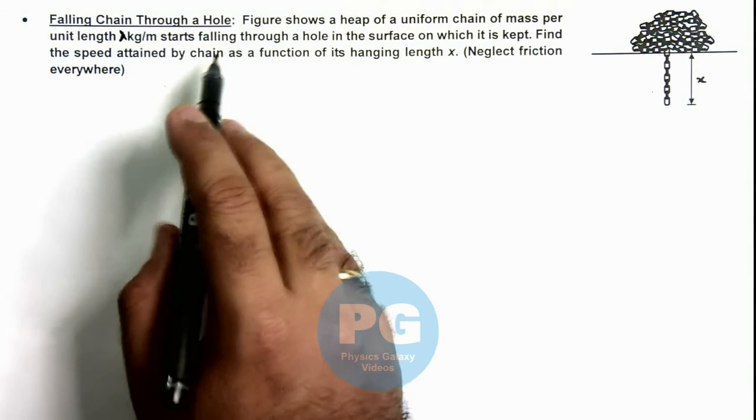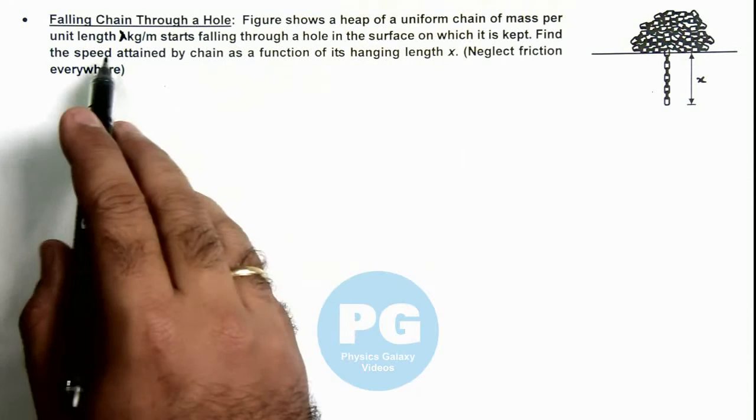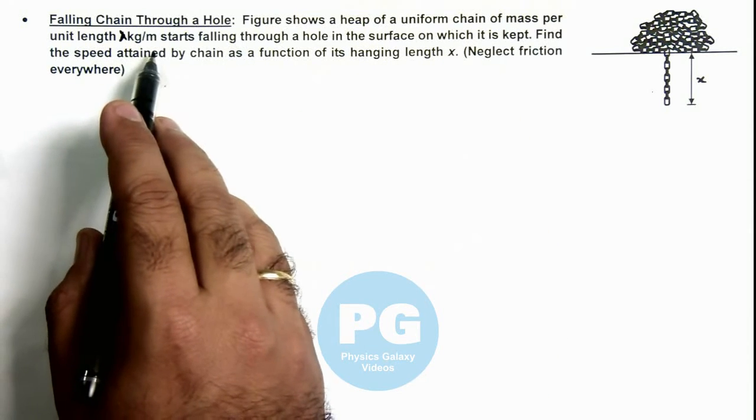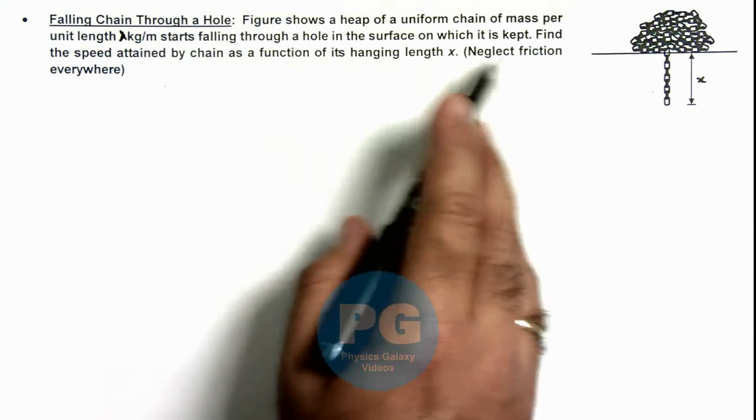In this illustration we'll discuss a falling chain through a hole. The figure shows a heap of uniform chain of mass per unit length lambda kilograms per meter, starting to fall through a hole in the surface on which it is kept.